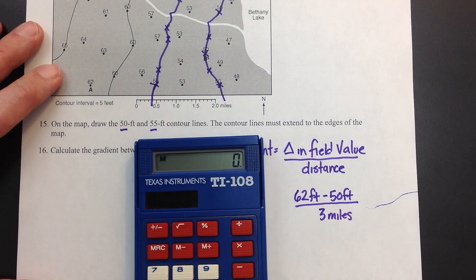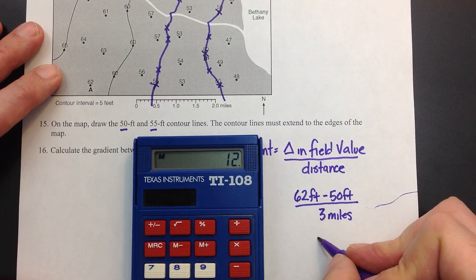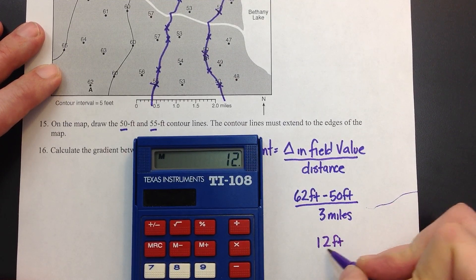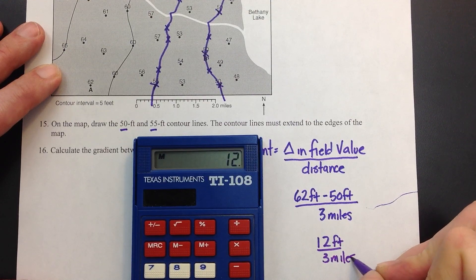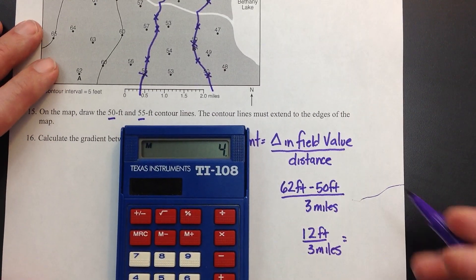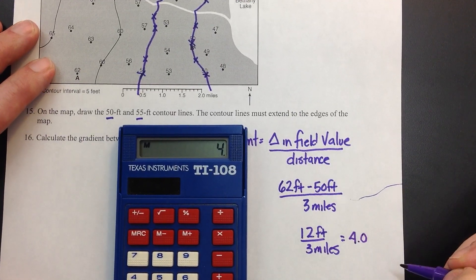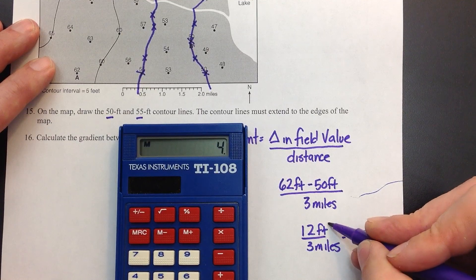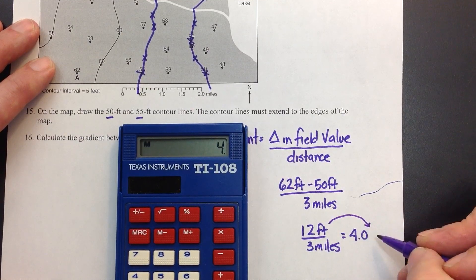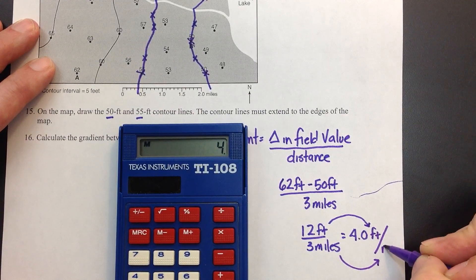Now we're just going to round to the tenths place. 62 minus 50 is 12. So it's 12 feet divided by 3 miles. Divided by 3. So I get a whole number there of 4. What you're going to want to do is you're going to want to put a 0.0 after a whole number. And what happens is the top unit comes first. Feet divided by the bottom unit of miles.